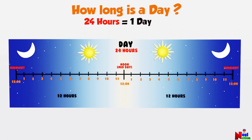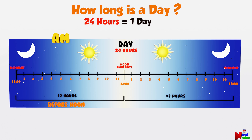The midpoint is called noon or midday. The first 12 hours is called before noon — we use AM to tell time starting from midnight to noon. The second half of the day is called afternoon — we use PM to tell time starting from noon to midnight.